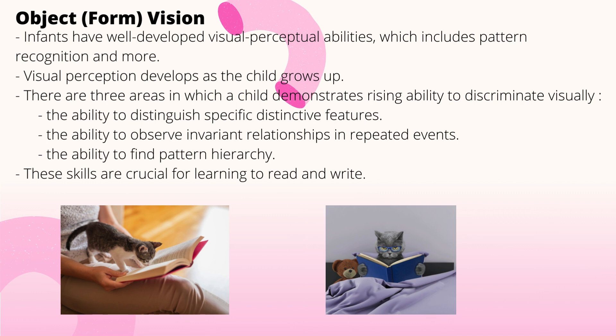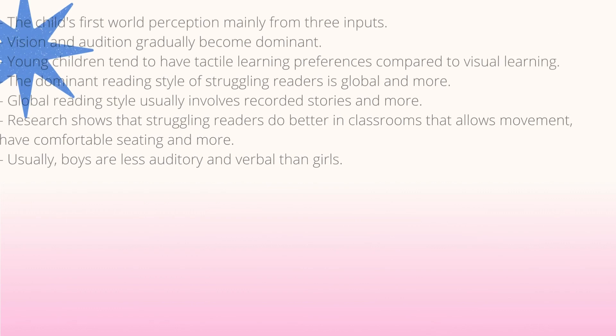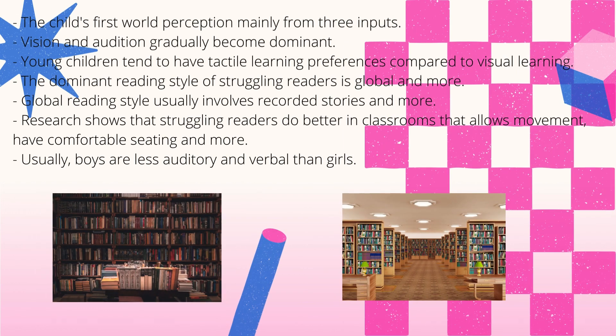There are three areas in which a child demonstrates rising ability to discriminate visually: first, the ability to distinguish specific distinctive features; second, the ability to observe invariant relationships and repeated events; and third, the ability to find pattern hierarchy. These skills are very important for learning to read and write, and allow the processing of the largest unit possible for adaptive performance during a specific task.